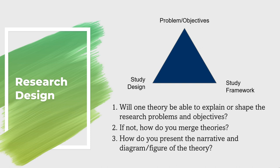Some questions to ask yourself when doing a research design: Will one theory be able to explain or shape the research problem and objectives? Two, if not, how do you merge theories? Or three, how do you present the narrative and diagram or figure of the theory?